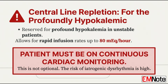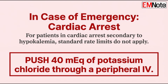When do we absolutely need to switch to a central line? A central line is for the truly unstable patient with profound, life-threatening hypokalemia. Through a central line, you can push the rate up to 80 milliequivalents per hour — but that patient requires continuous cardiac monitoring for the entire infusion. And in the absolute worst case, cardiac arrest from hypokalemia, the normal rules go out the window: push 40 milliequivalents of potassium chloride rapidly through a peripheral IV. It's a life-saving exception.